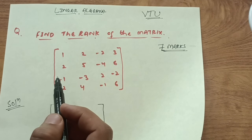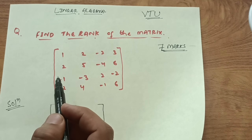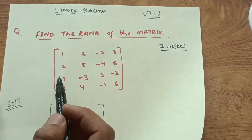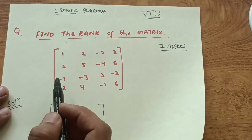If all the elements in a row are zero, then we cannot call it a non-zero row. In this process there are three to four steps — you write down the row transformations and you can simultaneously do multiple transformations in one step as well.